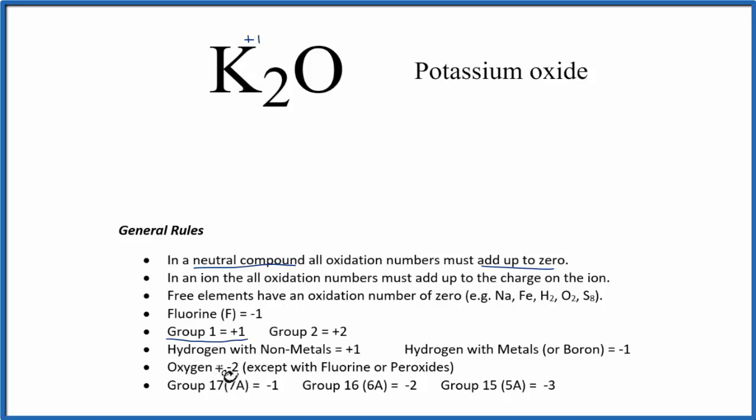Oxygen, that's always going to be a negative two, with just a few exceptions. So these are the oxidation numbers for each of the elements in K2O.